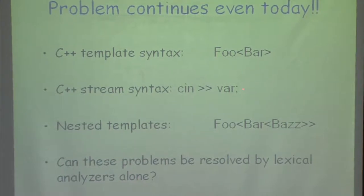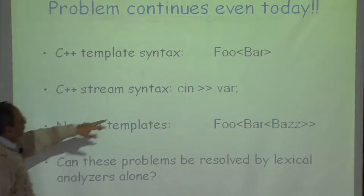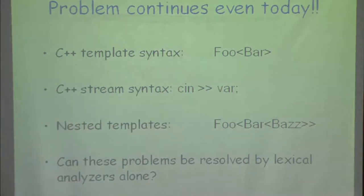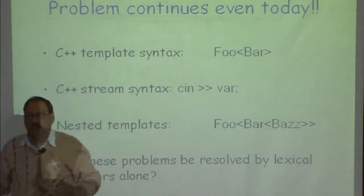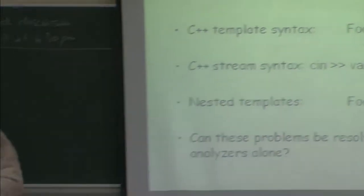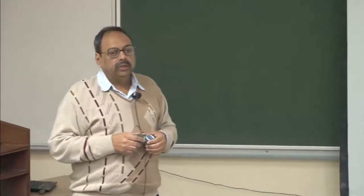If the symbol occurs in this context then I know. When I am just tokenizing, I will not know because I have no other information. If it is in a nesting context, I will say these are two right angle brackets; if it is the output operator, I will say this is output. But this context I will know only when I handle subsequent phases. Most of these problems cannot be handled by a lexical analyzer alone — I need to pass this information to the syntax analyzer and then resolve what these tokens could be.